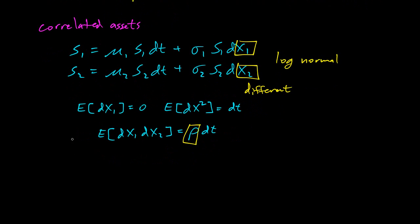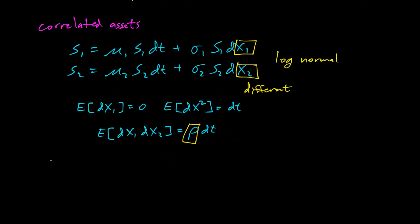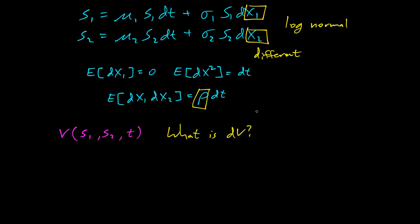Okay, so now we have correlated assets. Suppose we have some V is a function of S1, S2, and time. And we have a question, what is DV? And the answer is, of course, Ito's lemma. So yet another version of Ito's lemma. How's it work?